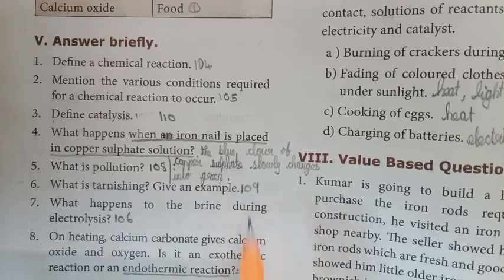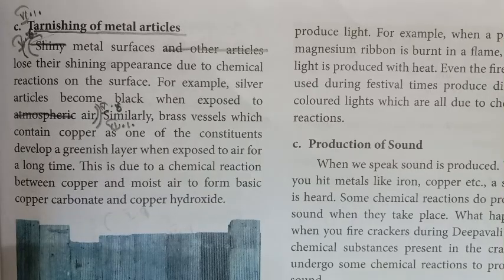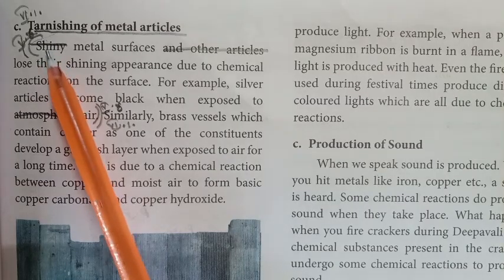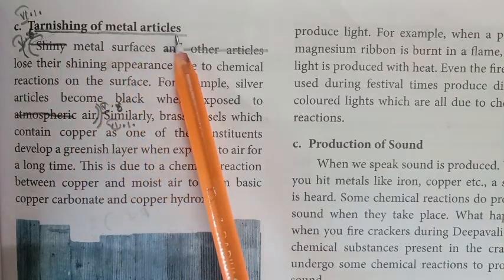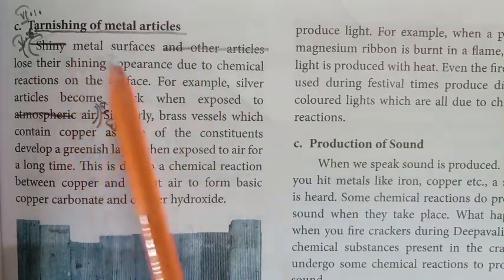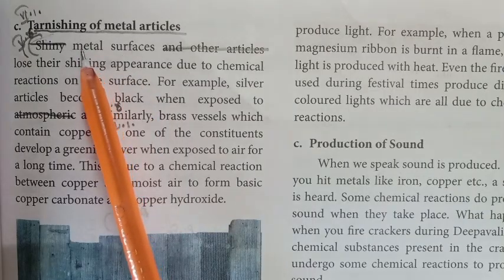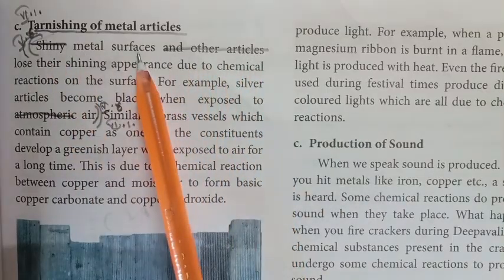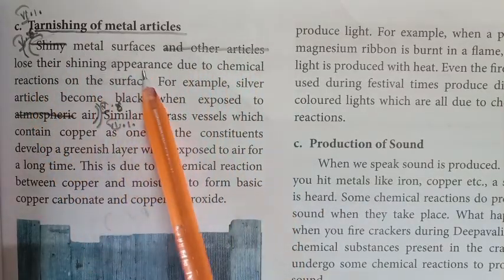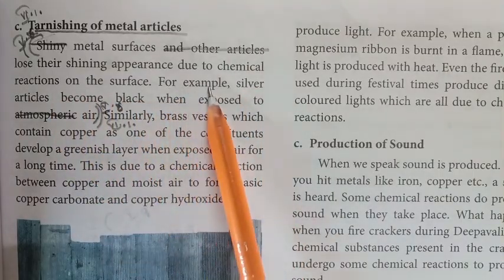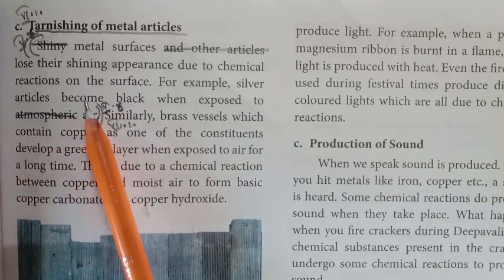Next question answer from page number 109, left side, first paragraph under the heading 'Tarnishing of Metal Articles,' first line: metal surfaces lose their shining appearance due to chemical reactions on the surface. For example, silver articles become black when exposed to air.